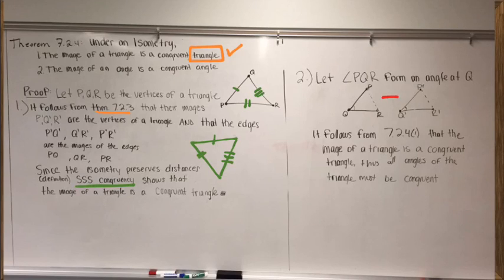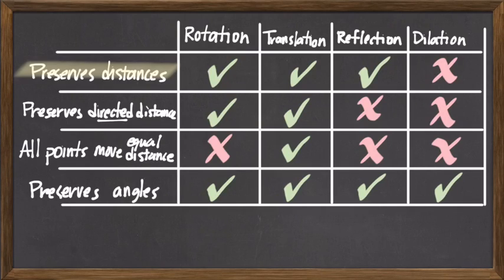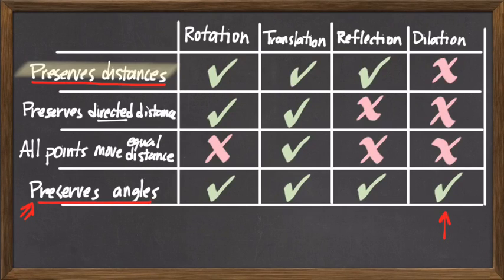Because the entire triangle remains congruent when we apply an isometry to it, any one of its angles will have its measure preserved as well, guaranteeing that isometries always preserve angles. This last line in our classification table is justified: any isometry, by virtue of preserving distances, will necessarily also preserve angles, according to theorem 7.2.4. The reverse is not true, however — dilations are an example of a similarity transformation, which preserves angles but does not have to preserve distances.